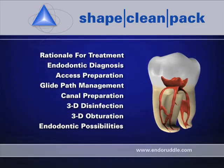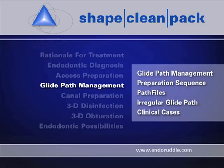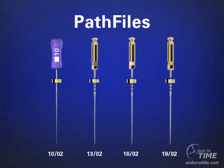We've talked about the traditional way of making a glide path using 10 and 15 hand files. Recently there's been the development of path files, which give us a mechanical way to rapidly shape longer canals, smaller diameter canals, and more curved canals. In longer, smaller diameter, and more curved canals, significant chair time can be saved in a very safe way using three path files.